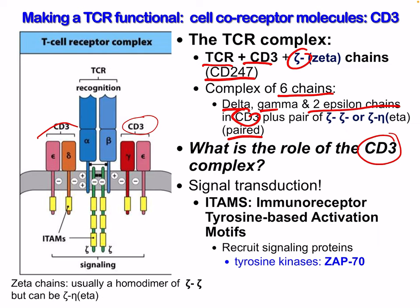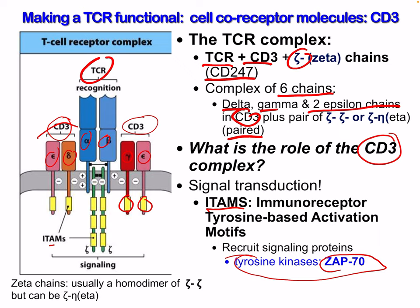The role of the CD3 complex is signal transduction. As we've seen before, there are ITAMs — immunoreceptor tyrosine-based activation motifs — which activate and recruit signaling proteins called tyrosine kinases, in this case ZAP70. We have our T cell receptor alpha-beta, then our CD3 with epsilon-delta and gamma-epsilon chains, then the Zeta chains, and our ITAMs.